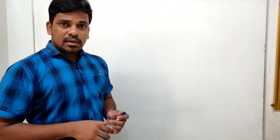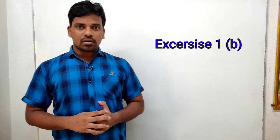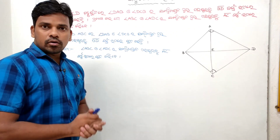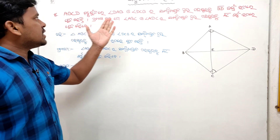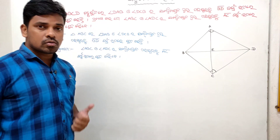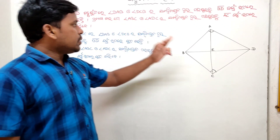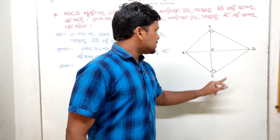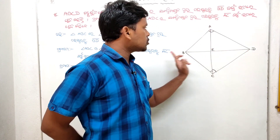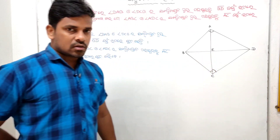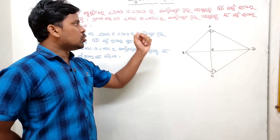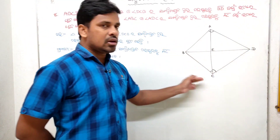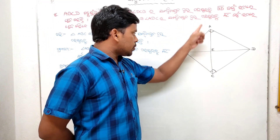Thank you all. Today we start the video. We are doing Exercise A, Room Number 8, 9, out of 10. So let's start. We are looking at Exercise A, Room Number 8. Let's look at ABC — BC, DB, BD, DC — we are doing AS with ABC.